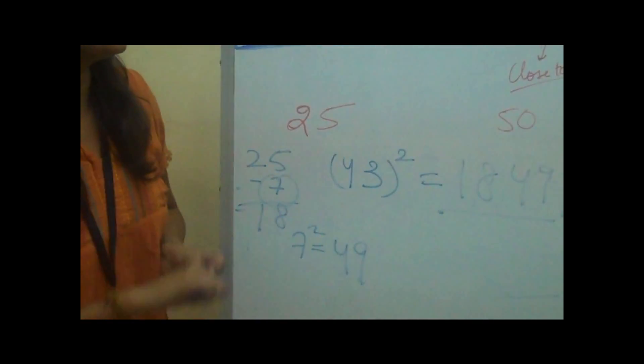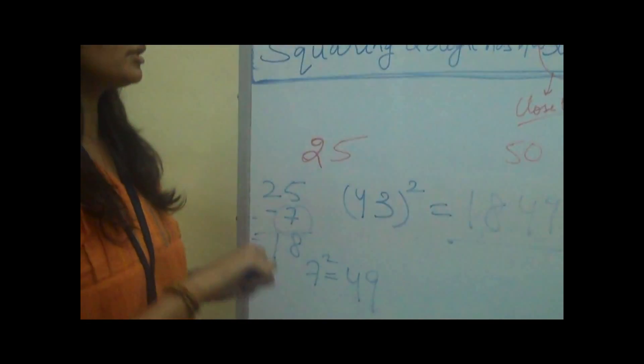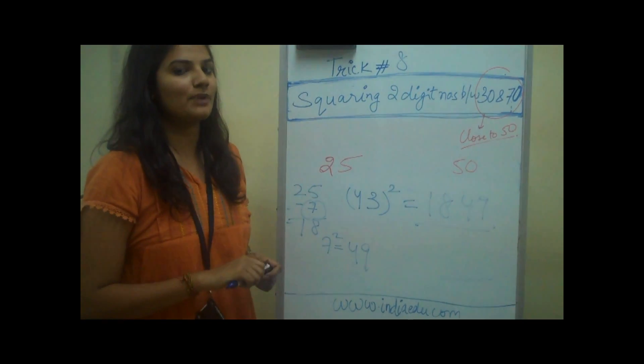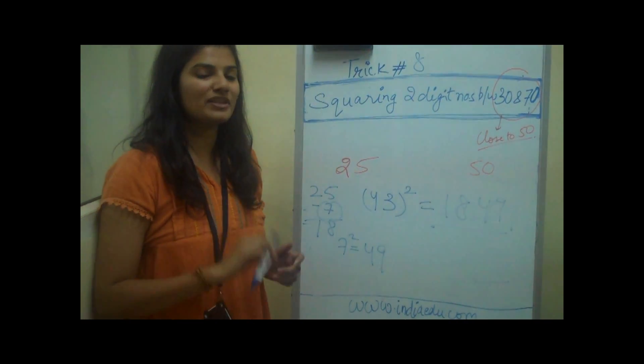So in this manner you can square two digit numbers which are between 30 and 70 and you can impress your friends and family. See you in the next trick.